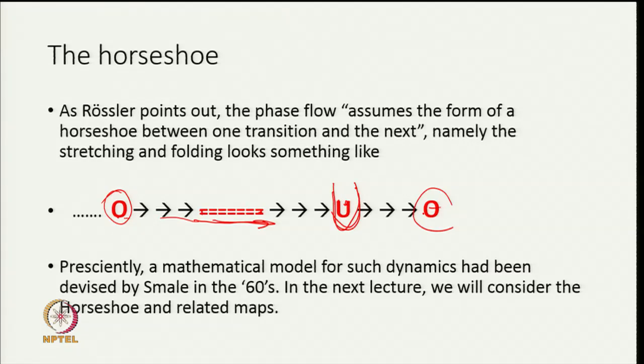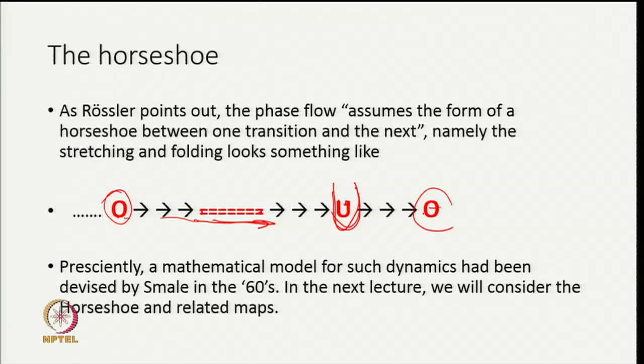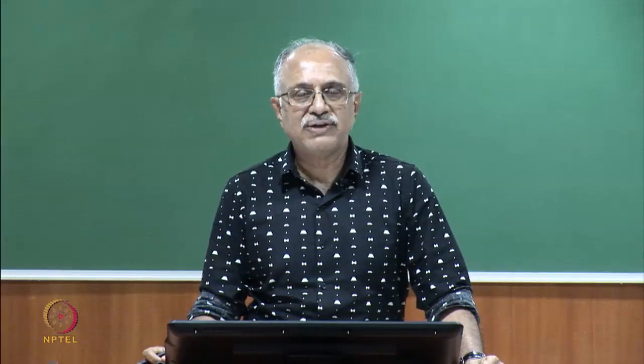As it happens in the 1960s, a mathematical model for such dynamics had been constructed by Stephen Smale, a very famous mathematician who was awarded the Fields Medal. Smale had described dynamics of this kind with a construction very much like the horseshoe. This is our best idea of how chaotic motion happens in such systems when phase space is stretched, folded and put back into the same general region. In the next lecture we will consider both the horseshoe map of Smale as well as related maps that deal with the manner in which phase space evolves.